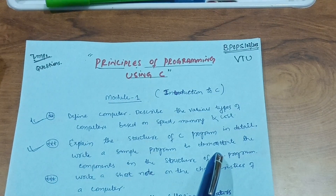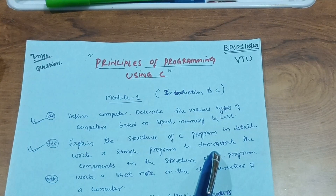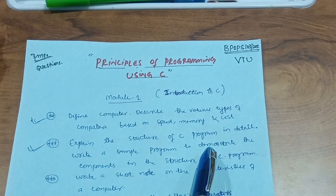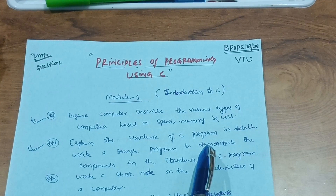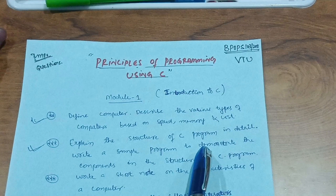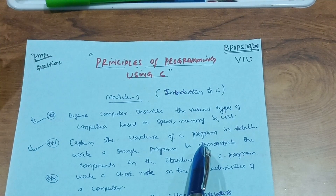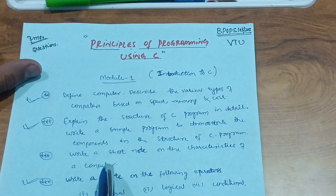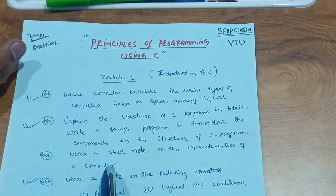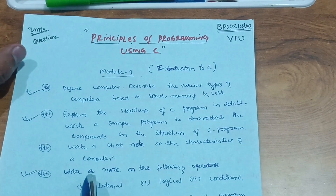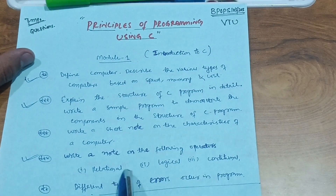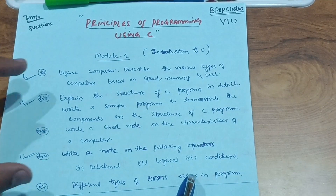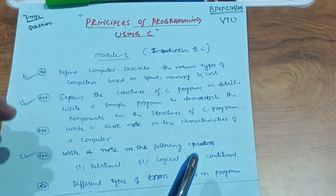There are 16 programs in this subject. If you are a computer science branch student you should focus on all programs, but if you just want to pass, I will mention only four to five or six programs to focus on. From Module 1, the key theory questions are: write a short note on the characteristics of a computer; write a note on relational, logical, and conditional operators; and explain different types of errors that occur in a program.